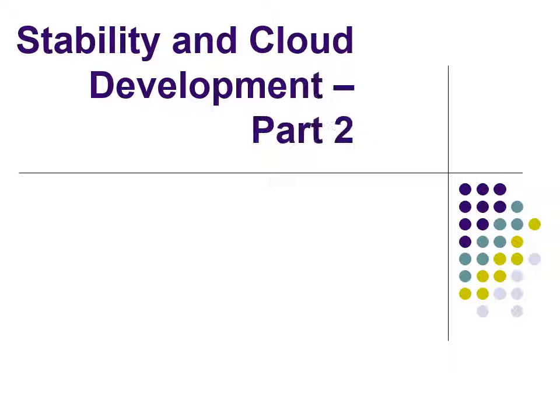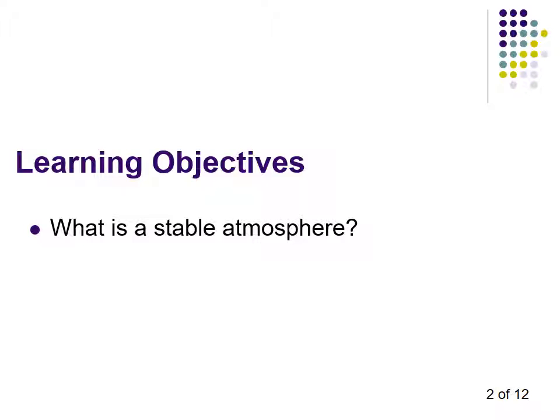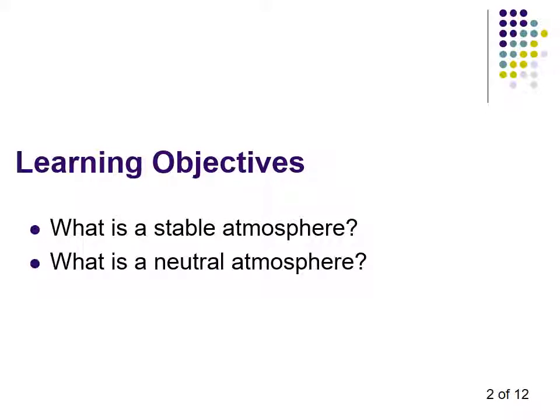This is Stability and Cloud Development Part Two, Chapter Six for ESCI 211. What do we need to remember from this part? You need to remember what is a stable atmosphere, what is a neutral atmosphere, and what is an unstable atmosphere.